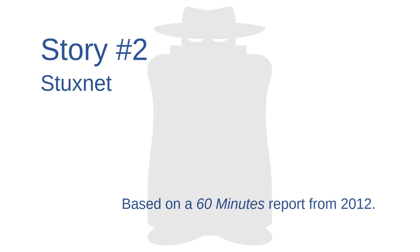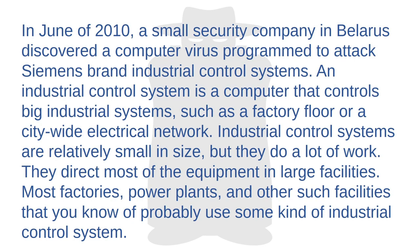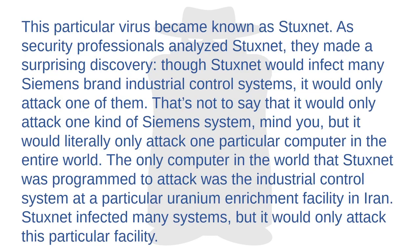The following story about a cyber attack probably carried out by a nation-state is based on a profile that ran on CBS's 60 Minutes in 2012. In June of 2010, a small security company in Belarus discovered a computer virus programmed to attack Siemens brand industrial control systems. An industrial control system is a computer that controls big industrial systems — such as a factory floor or a citywide electrical network. Most factories, power plants, and similar facilities use some kind of industrial control system.